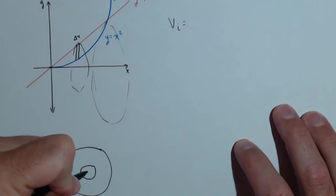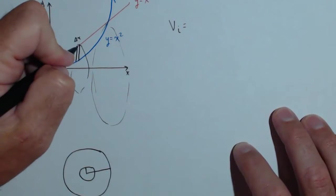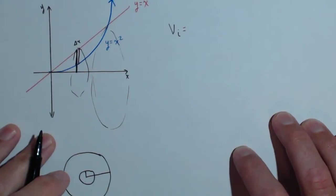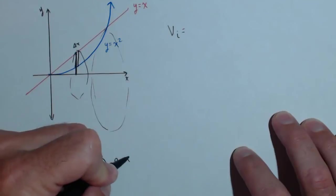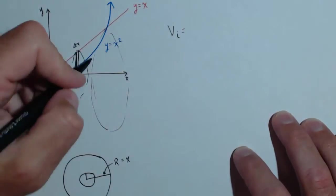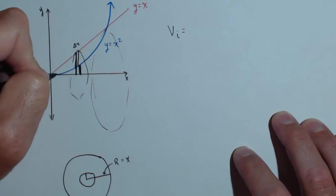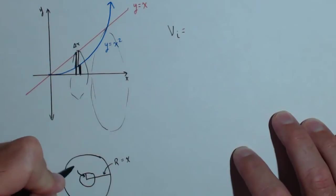And what we need are two radii, one for the small circle and one for the big circle. Notice that the big radius corresponds to this graph right here, the graph of y equals x. So that radius, let's call it big R for the big radius, is actually just x. Our small radius right here, notice no matter where I look, the small radius is x squared.